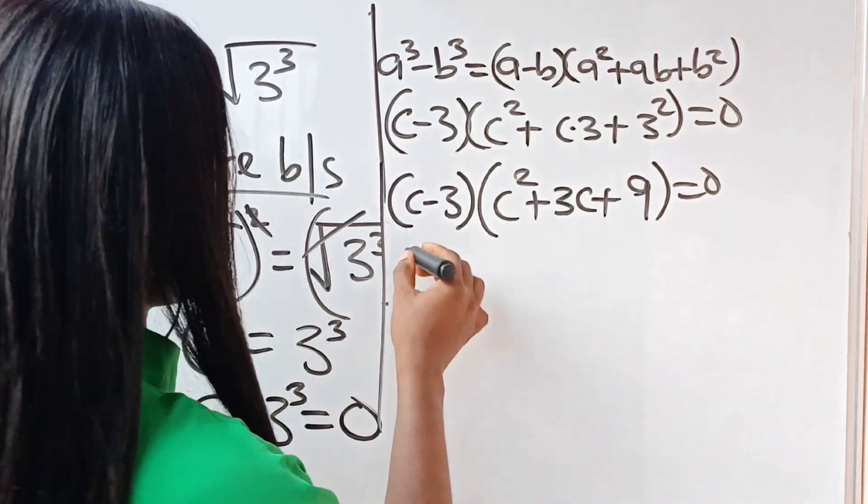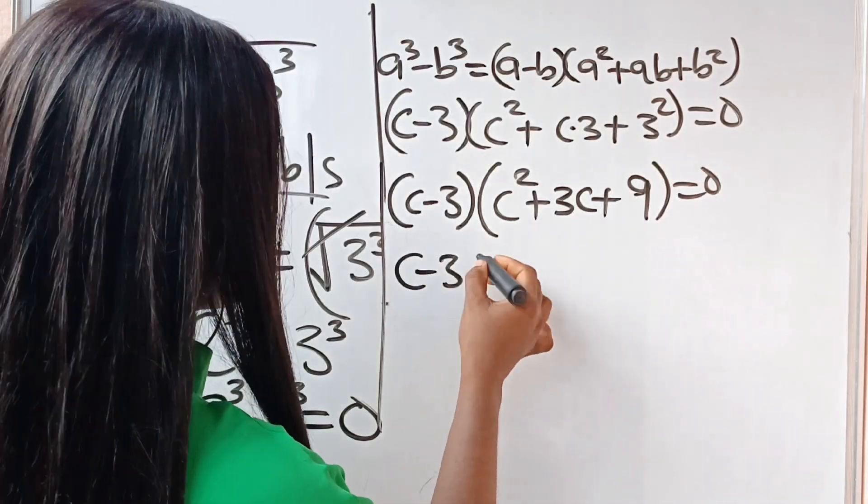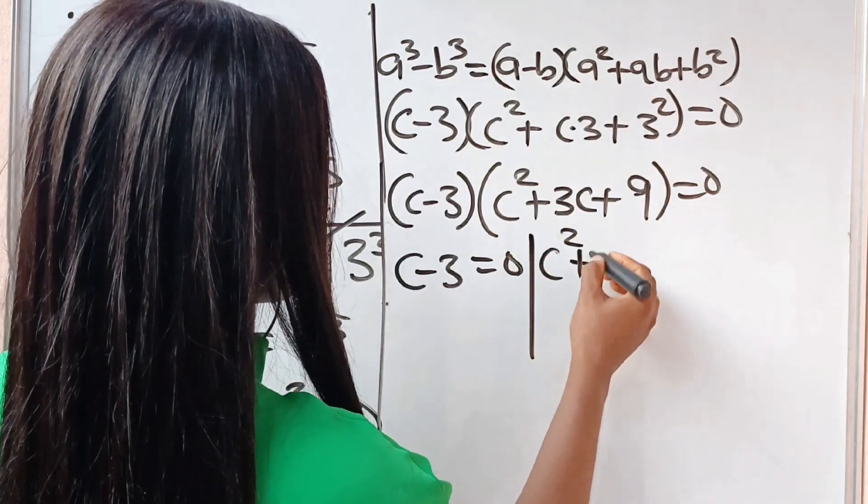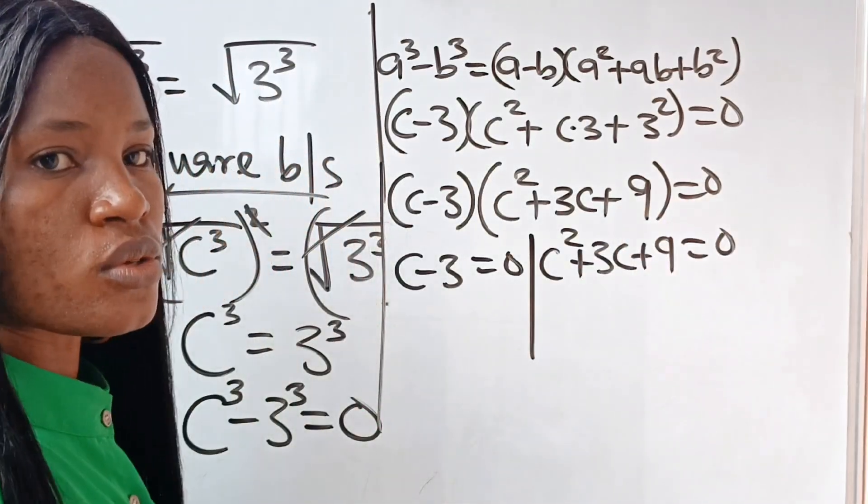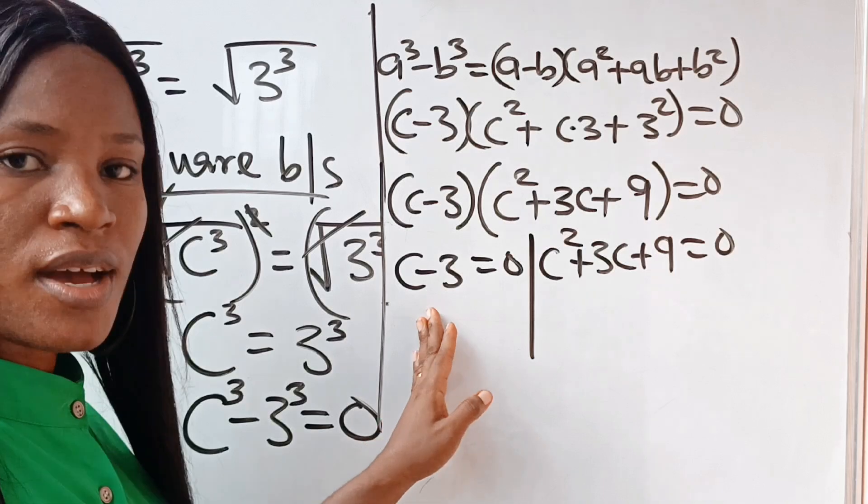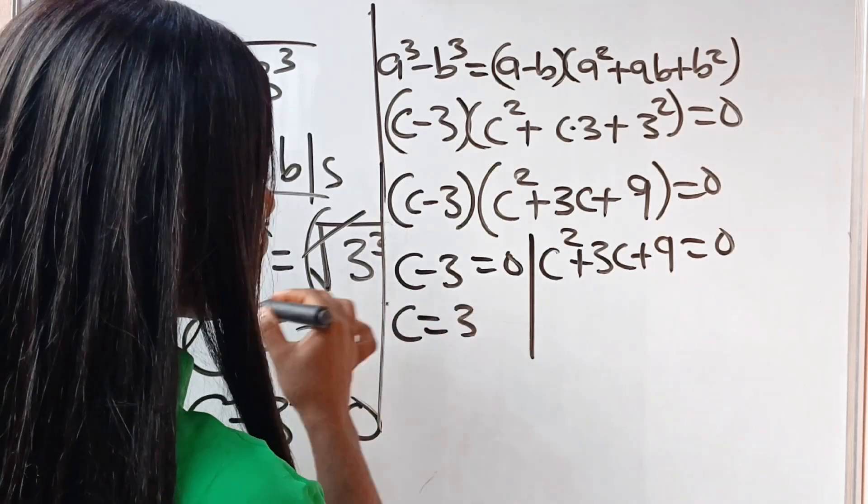So from here, we can see that c minus 3 is equal to 0 and c squared plus 3c plus 9 is also equal to 0. So for the left-hand side, we are going to get c to be equal to 3.